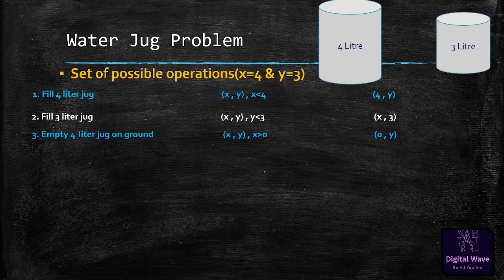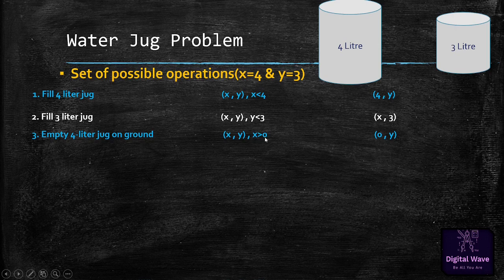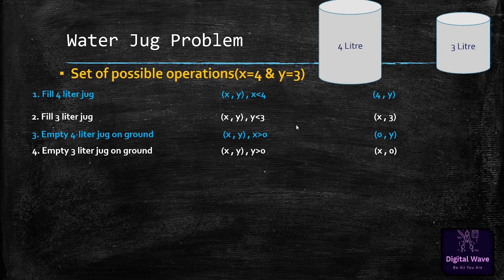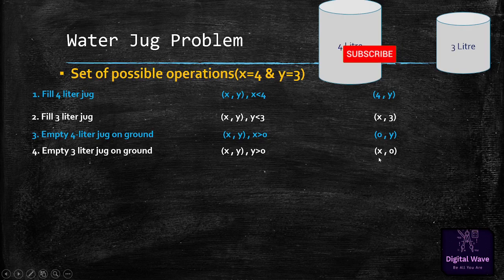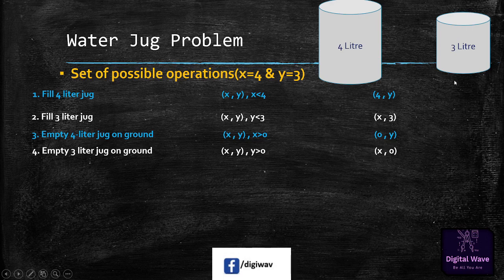The third operation is to empty the 4-liter jug onto the ground, with condition x > 0, resulting in state (0, y). If there is some water in the 4-liter jug, you can empty it onto the ground. The fourth operation is to empty the 3-liter jug onto the ground, with condition y > 0, resulting in state (x, 0). If there is some water in the 3-liter jug, you can pour it onto the ground.